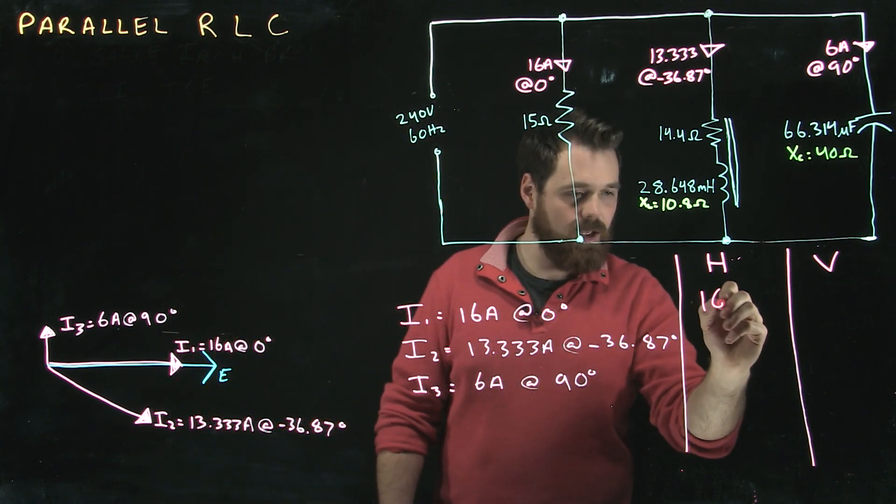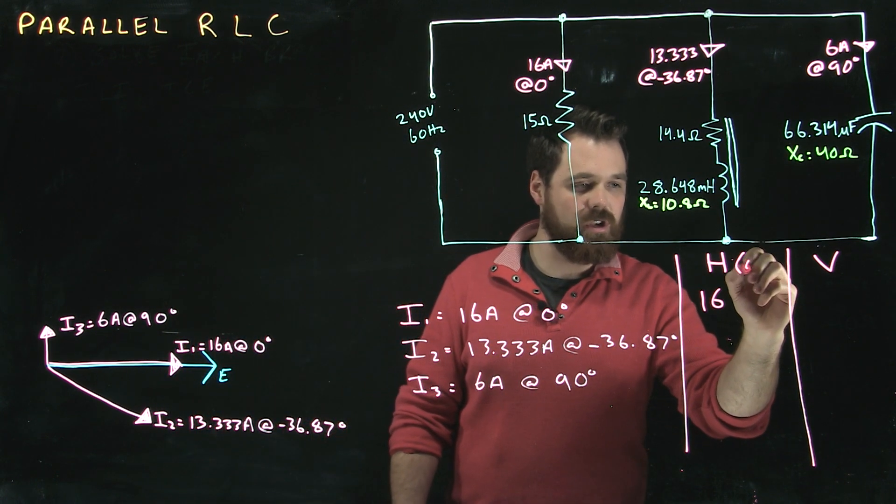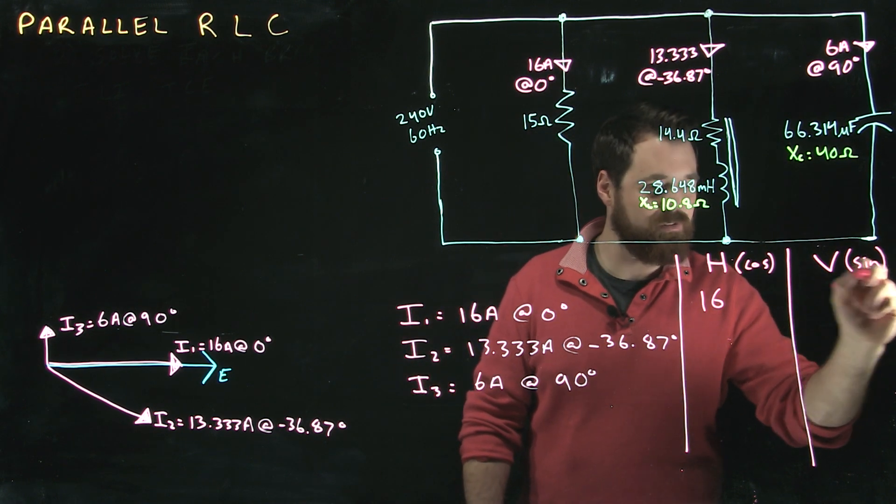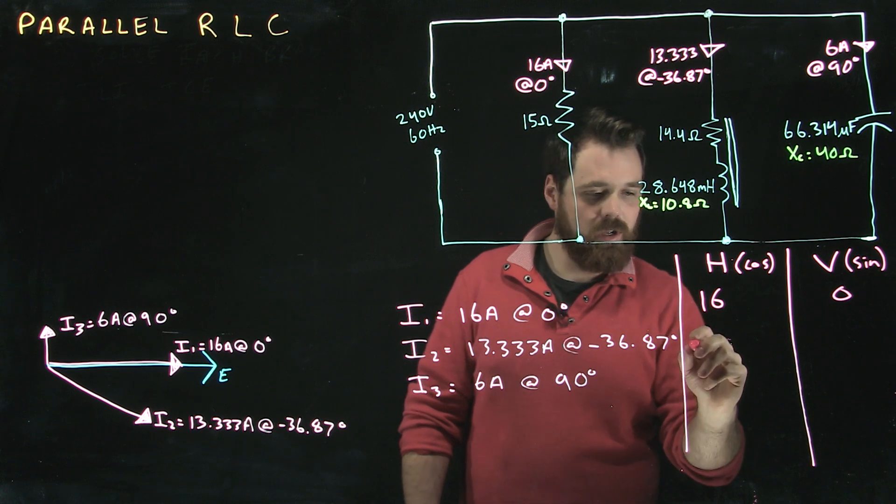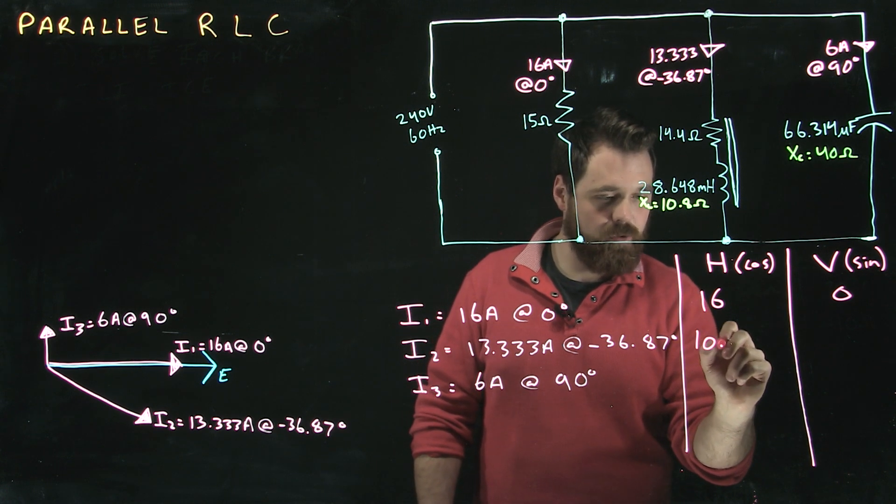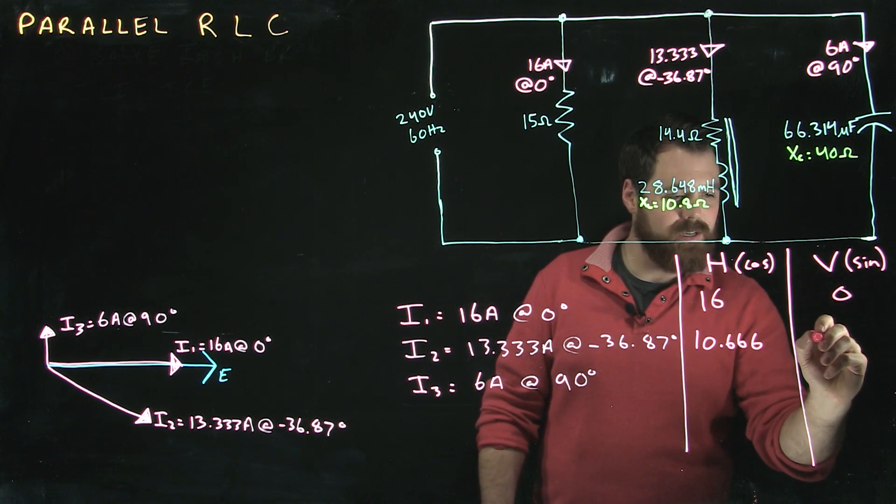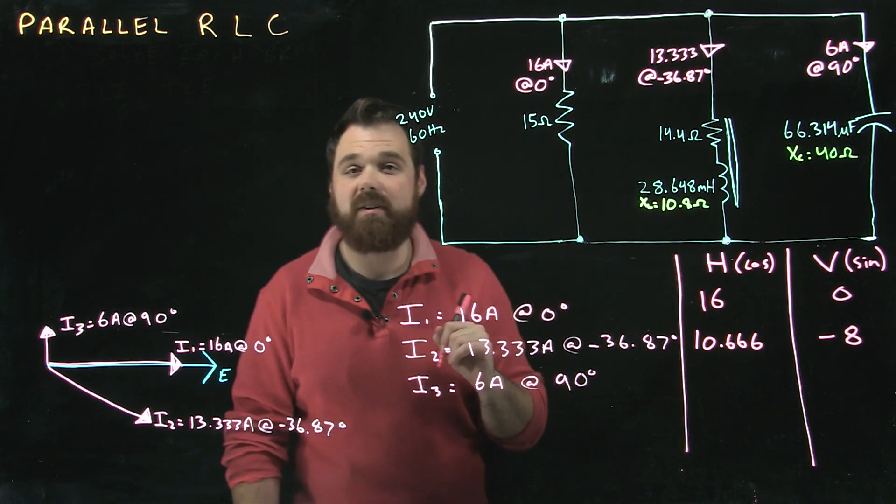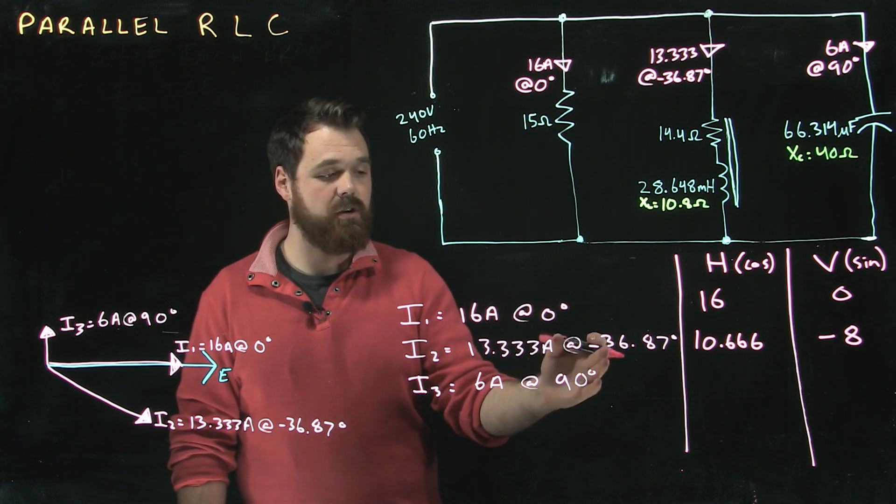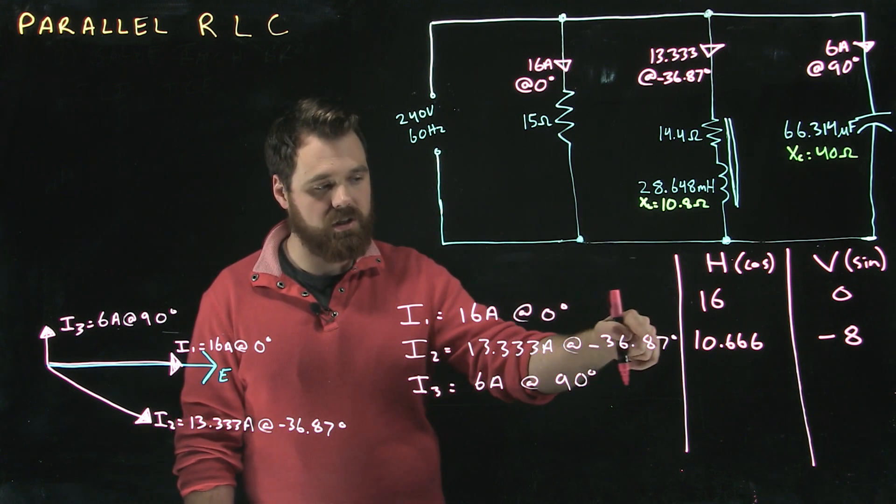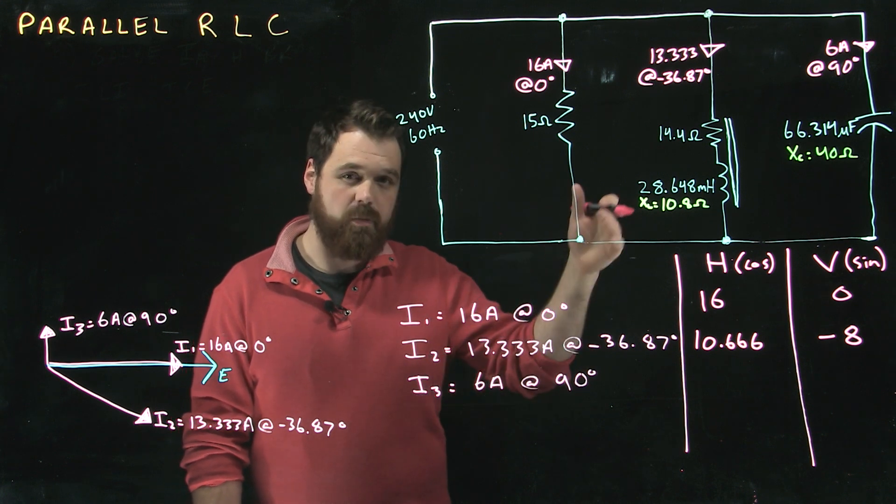So we get 16 amps, keeping in mind H is the cosine function and V is the sine function. For I2 we get 10.666 and negative 8. It's a negative angle, so make sure when you're putting it into your calculator you use that negative angle, or you go 360 minus 36.87 to get that proper angle.